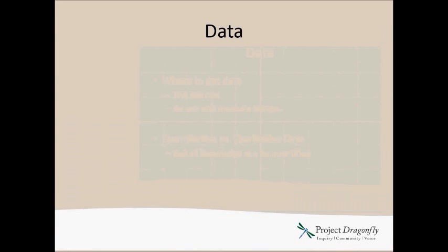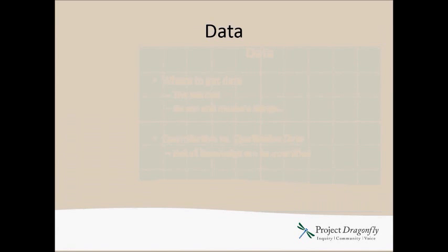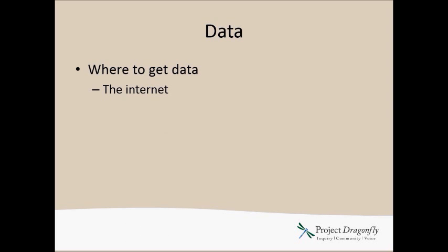One of the first things you want to do is get some data, and you can get that from the internet. There are many sites that publish data they're collecting — for example, NOAA, the National Oceanic and Atmospheric Administration, has data available on climate variables, and there are lots of other NGOs and groups that publish data as well.